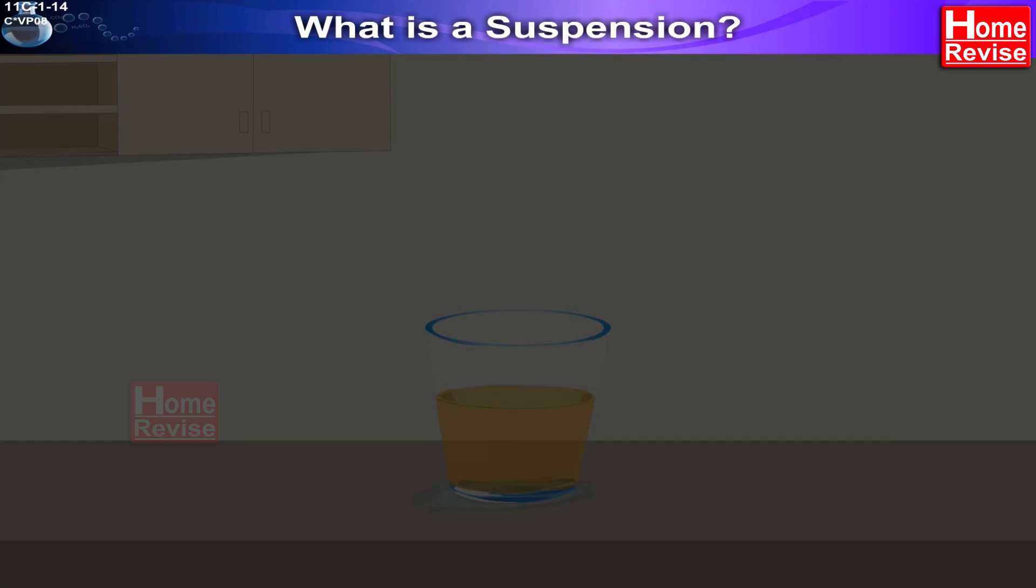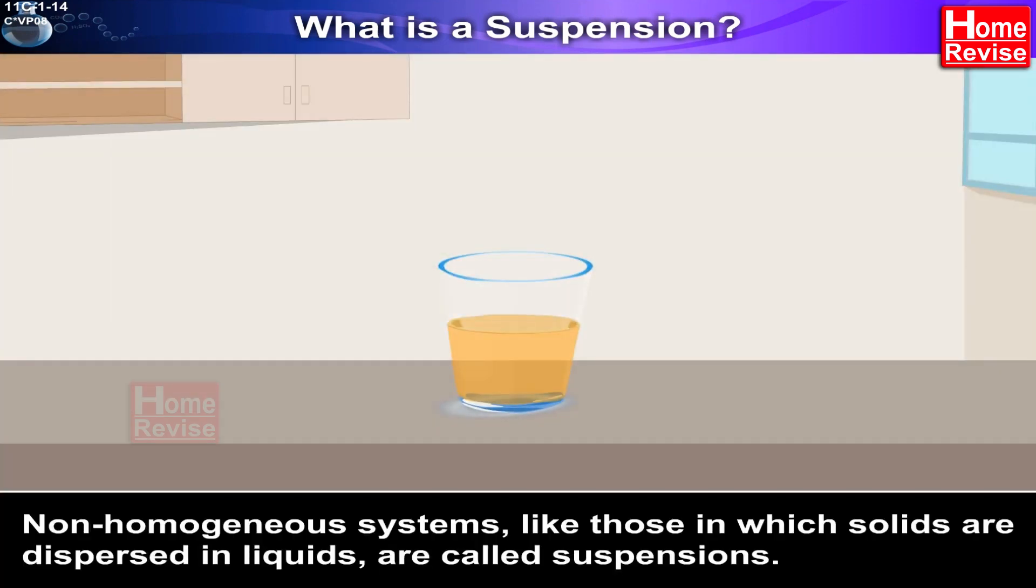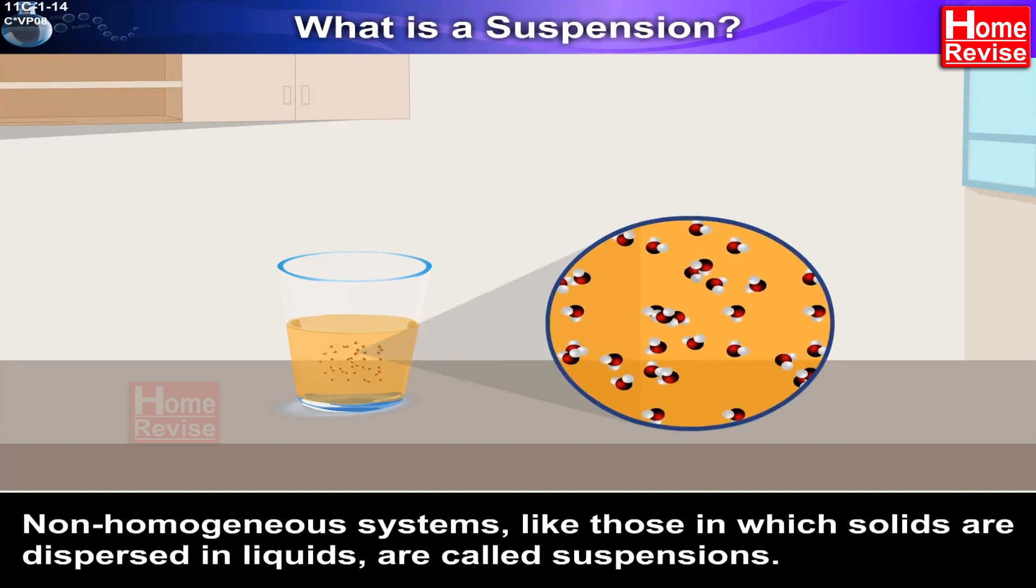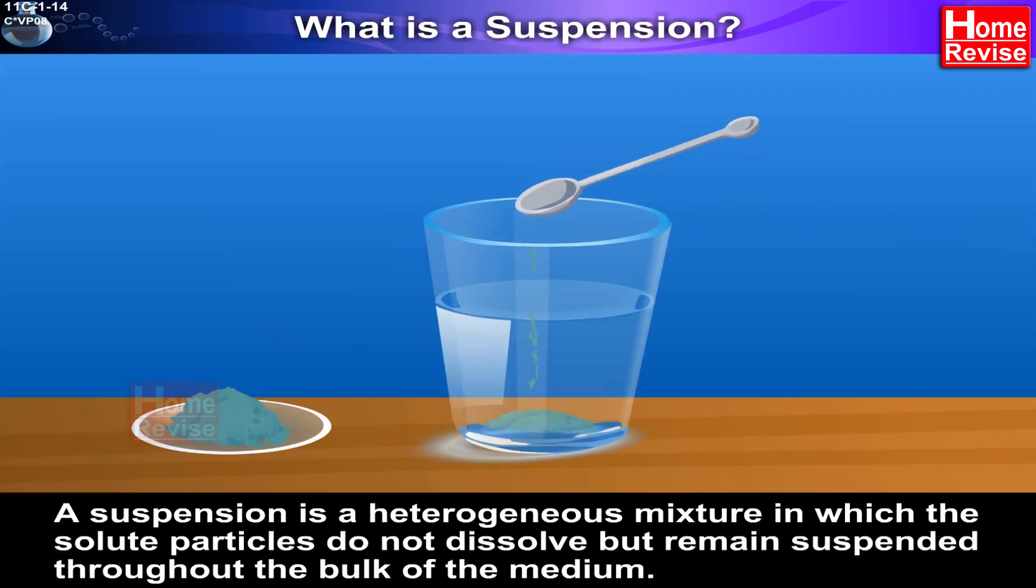What is a suspension? Non-homogeneous systems, like those in which solids are dispersed in liquids, are called suspensions. A suspension is a heterogeneous mixture in which the solute particles do not dissolve but remain suspended throughout the bulk of the medium.